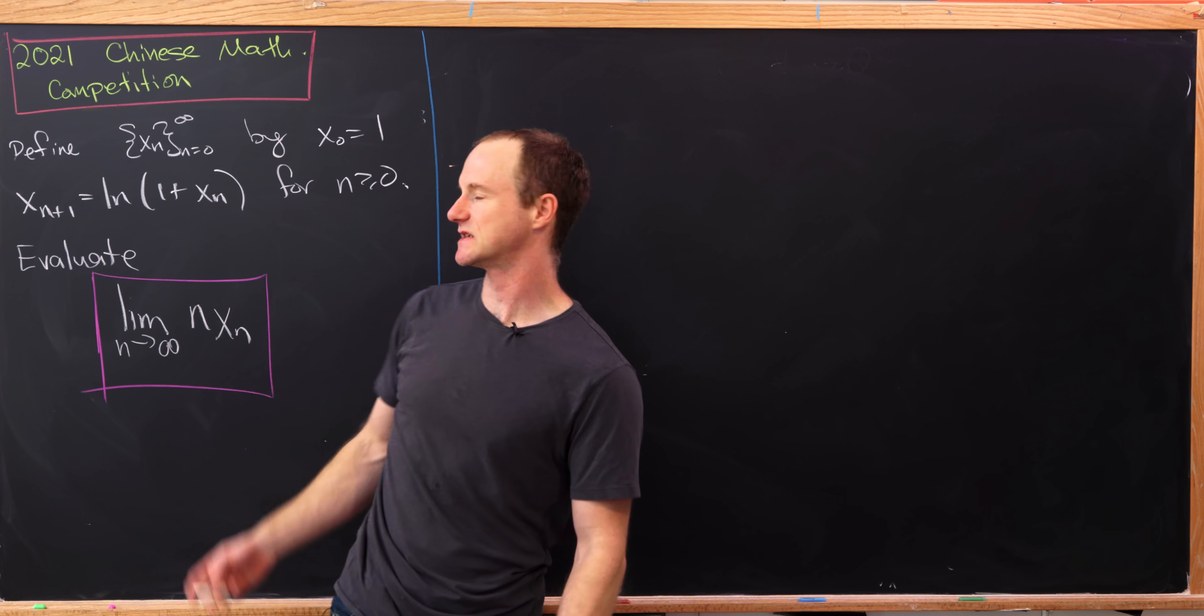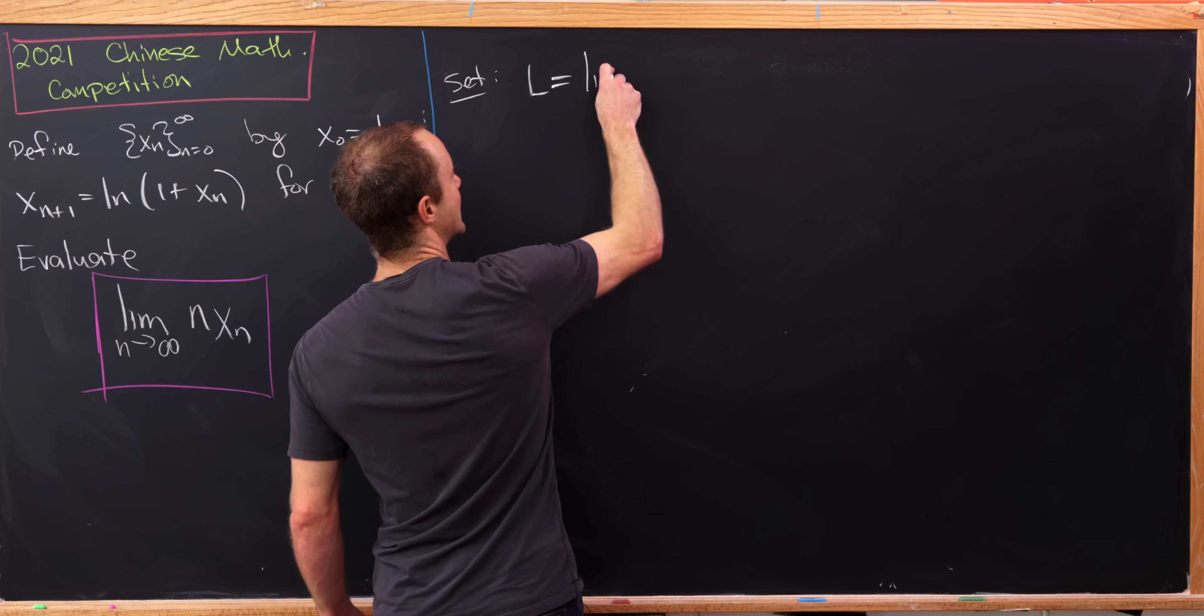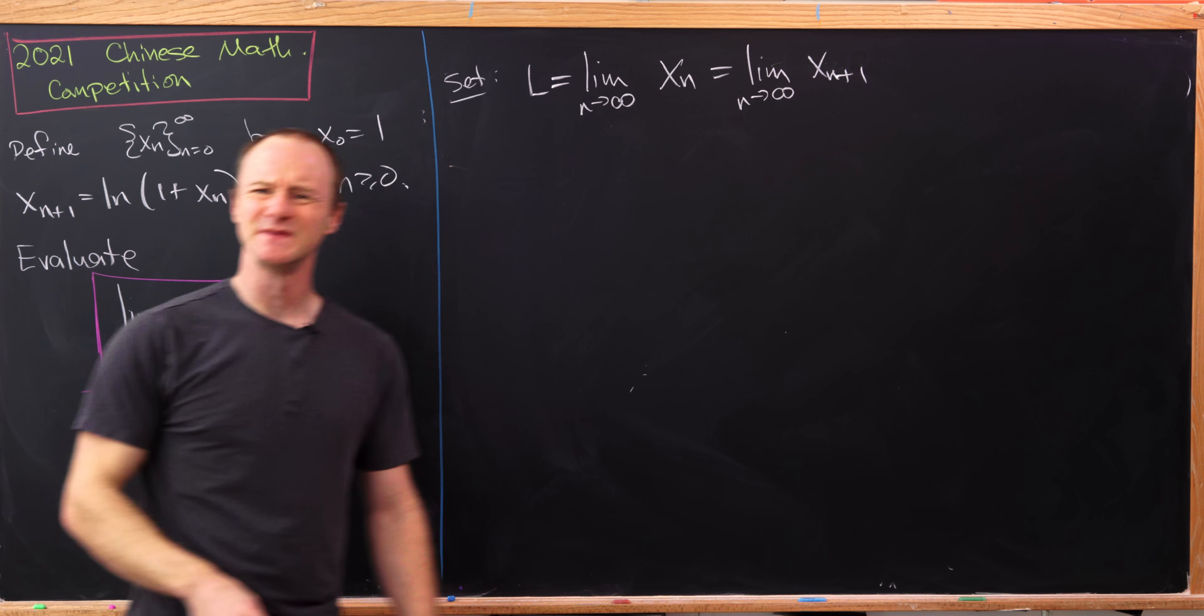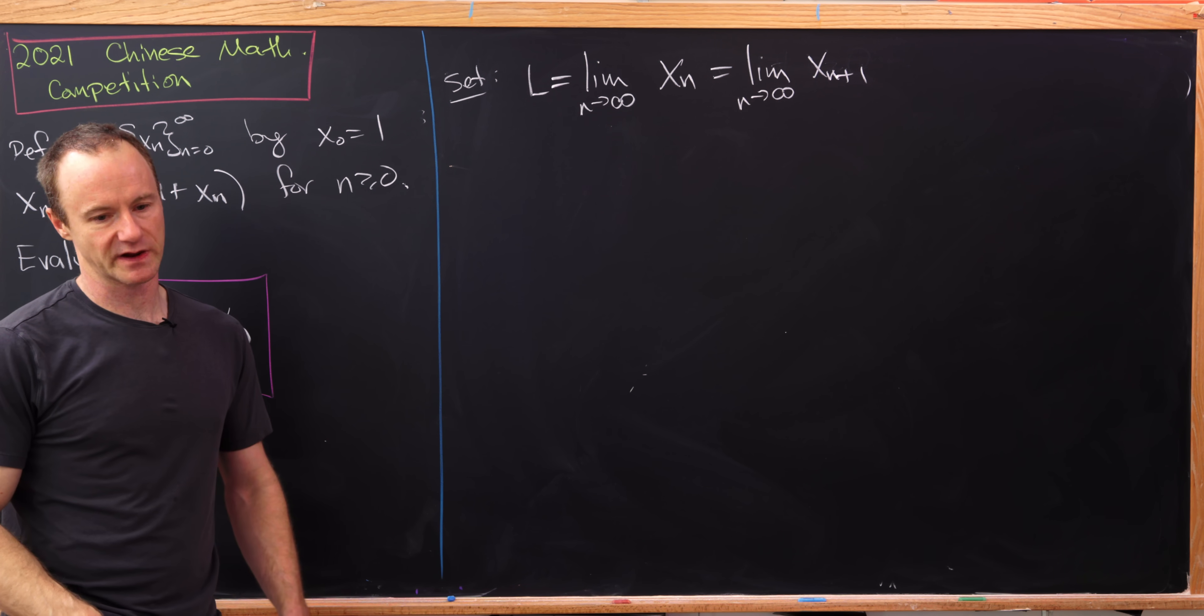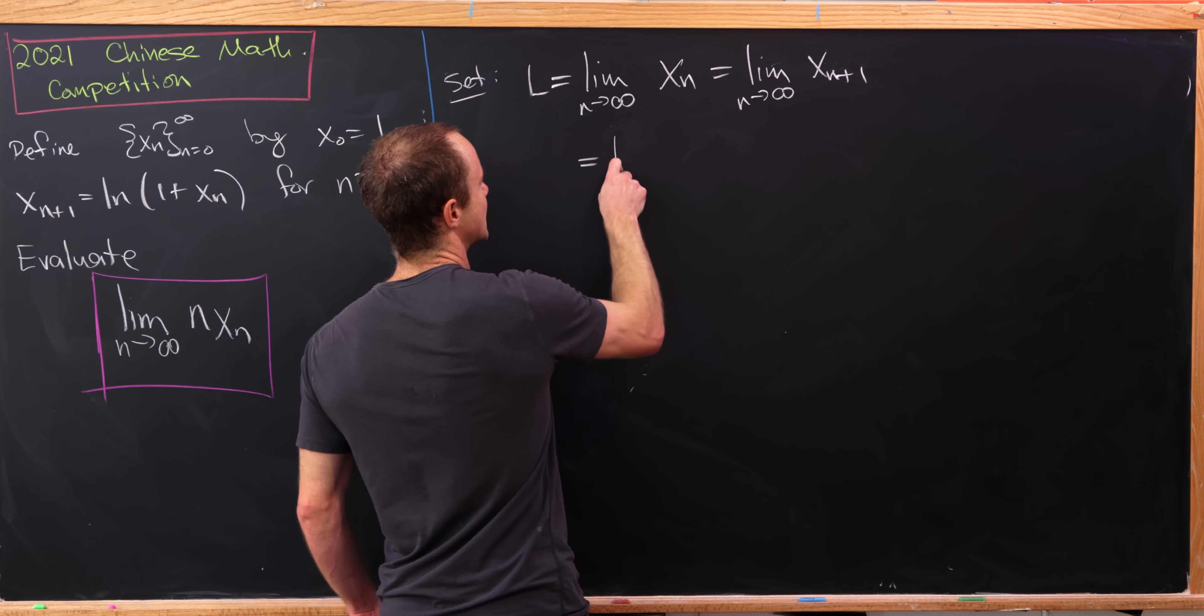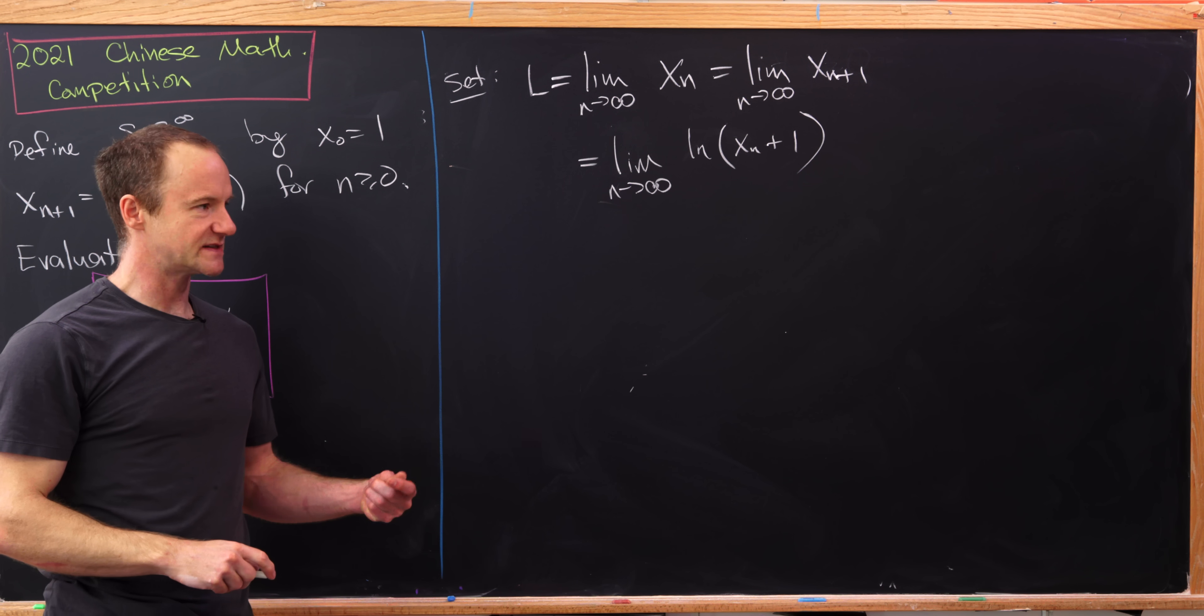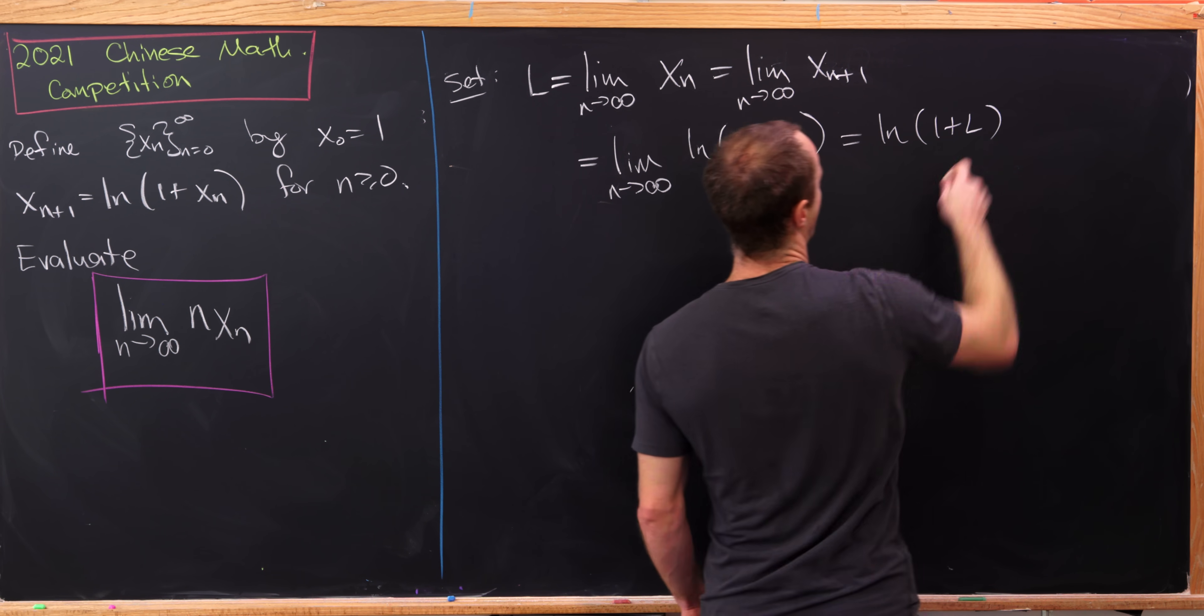So we just determined that our sequence x sub n converges. Now we're going to calculate the limit. Let's say capital L is this limit as n approaches infinity of x sub n. But that's the same thing as the limit as n approaches infinity of x_{n+1}. But now we'll rewrite x_{n+1} using our recursion, so that's the limit as n approaches infinity of the natural log of x_n plus 1. But now the logarithm is a continuous function, so we can factor it out of the limit, and that leaves us with the natural log of 1 plus L.